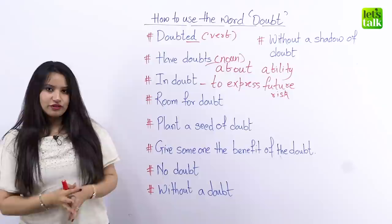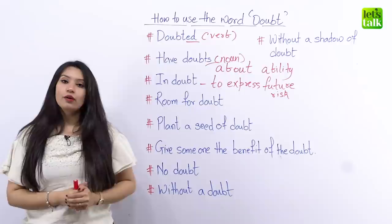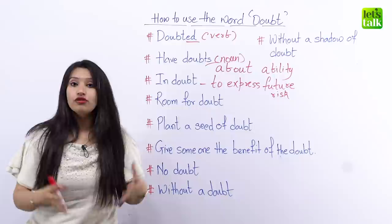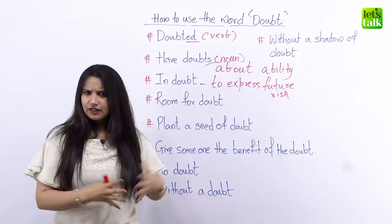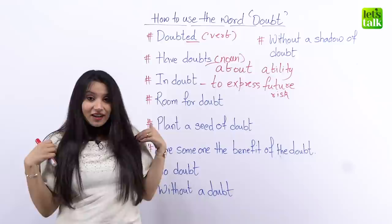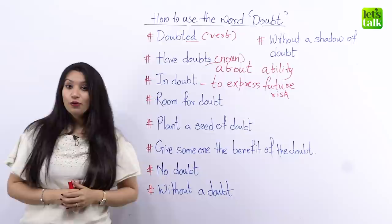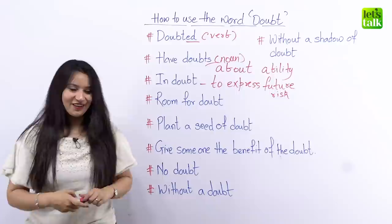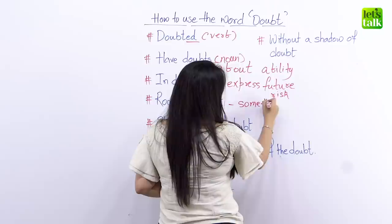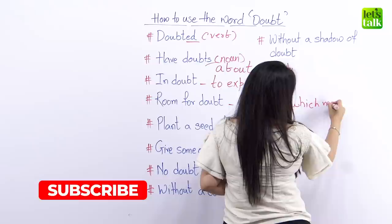Let's move forward and look at another interesting phrase: 'room for doubt.' Have you ever heard that before? We use 'room for doubt' whenever we are talking about a situation which we cannot completely trust. For example, we read so many facts on the internet — but do you think all of them are true? There is room for doubt, which means it may not be true every time. So 'room for doubt' means something which may not always be true.